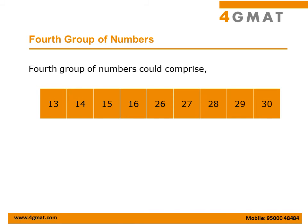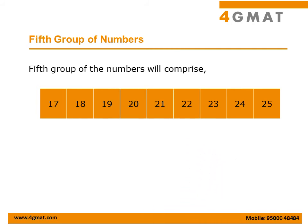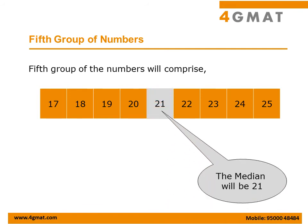Quickly running through the exercise: the fourth group has 26 to 30 as the last 5 numbers and 13 to 16 as the first 4 numbers, giving a median of 26. The fifth and last group has 21 to 25 as the last 5 numbers and 17 to 20 as the first 4 numbers, giving a median of 21.